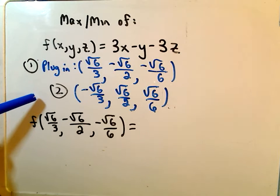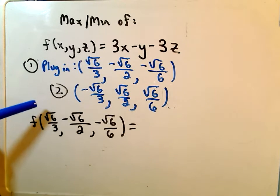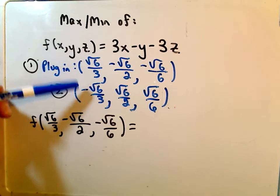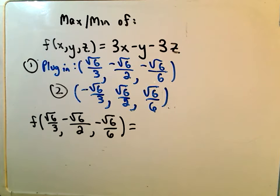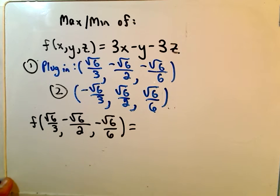So we were basically finishing off this Lagrange multipliers problem. All we were doing was just plugging in the points that we found into our function f of x, y, z, trying to find which one produced a maximum, which one produced a minimum.